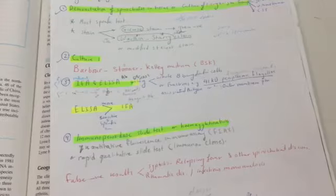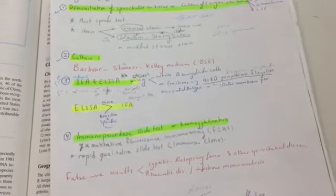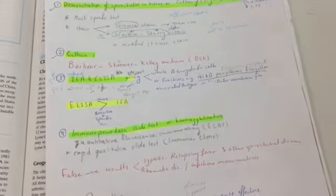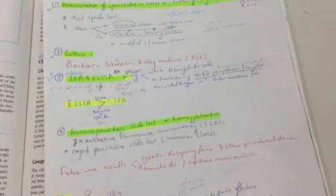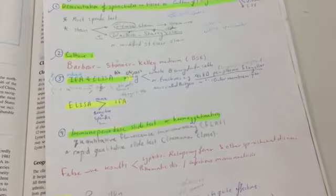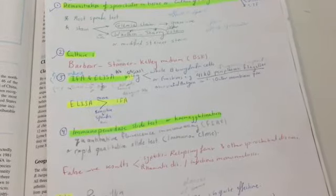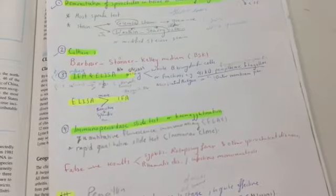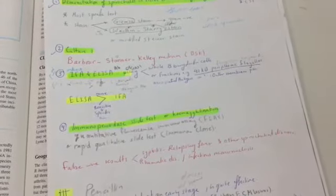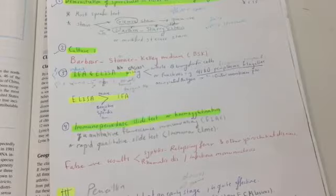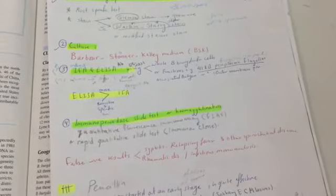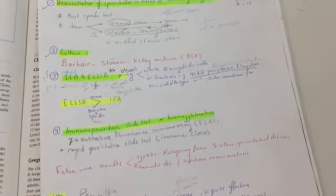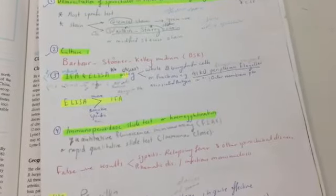And indirect fluorescence and ELISA using whole Borrelia burgdorferi cells or fractions like the 41-kilodalton periplasmic flagellate-associated antigen or the outer membrane protein. ELISA is more sensitive and specific than indirect immunofluorescence. And immunoperoxidase slide test or hemagglutination. This is a quantitative fluorescence immunoassay, a rapid qualitative slide test immunoclone.